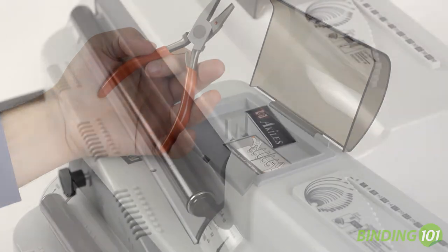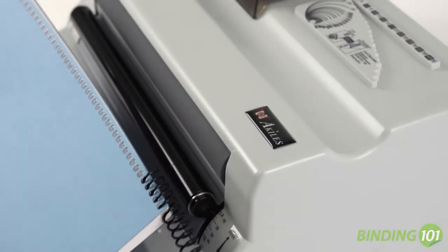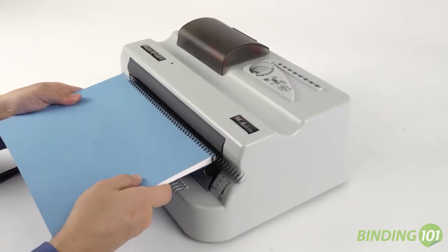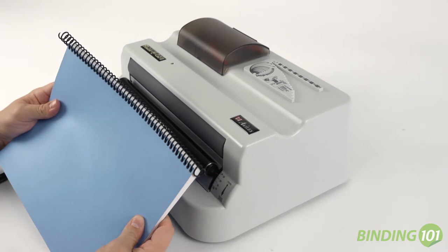To operate, simply start the first couple loops of coil by hand. Hit the foot pedal to start the roller spinning and tap the coil against the roller. The coil automatically spins into the holes that were punched in the document.